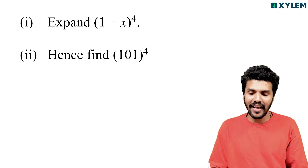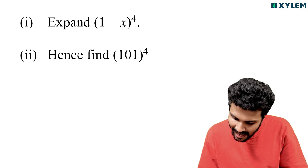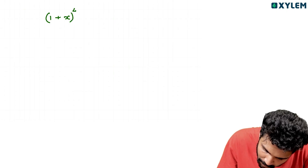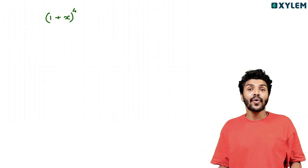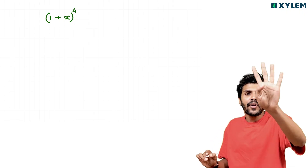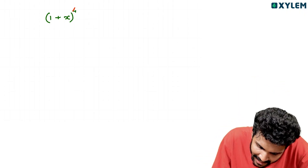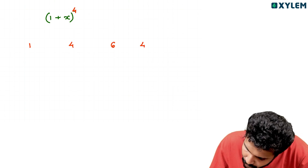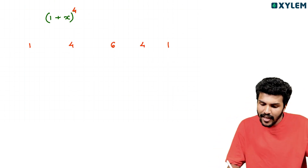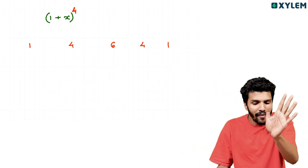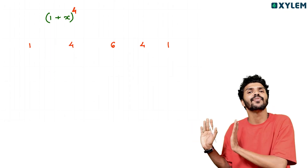Next: (1 plus x) whole raised to 4 — binomial expansion. Index 4, and the coefficients are equal to 1, 4, 6, 4, 1.